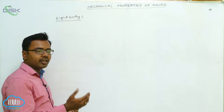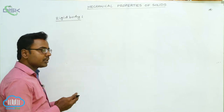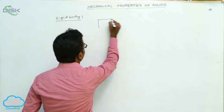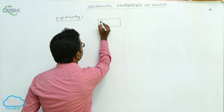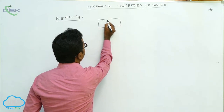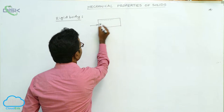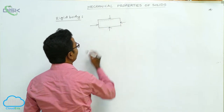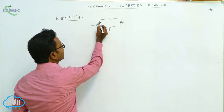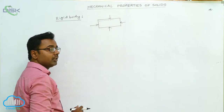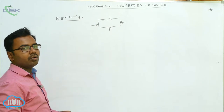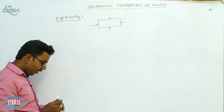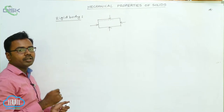We can also define a rigid body in terms of molecular arrangement: on application of force, if no change is produced either in size or shape, then the relative positions of the molecules in the body do not change. If the applied force does not change the relative positions of the molecules, then such a body is called a rigid body.